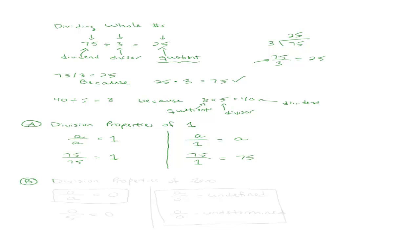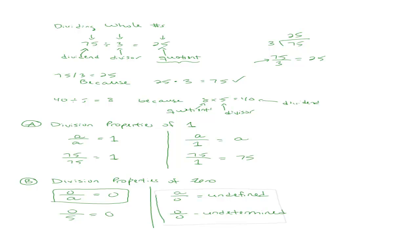Let's talk about the division properties of 0, which are worth knowing because people often get confused with these. The first one is that 0 divided by any number will be 0. For example, if you have $0 divided by 5 people, each person gets $0. The other property is that any number divided by 0 is undefined. And there's one more: 0 divided by 0 is undetermined. For now, just memorize that 0 divided by any number is 0, any number divided by 0 is undefined, and 0 divided by 0 is undetermined.